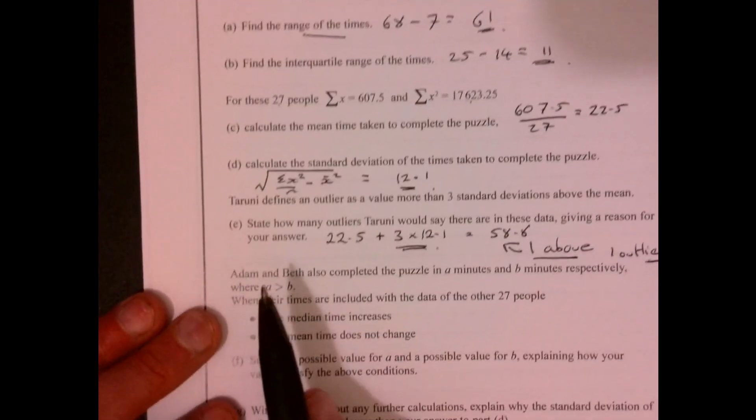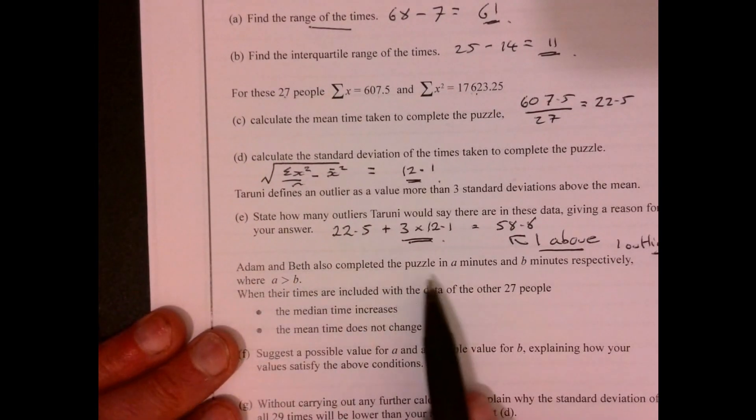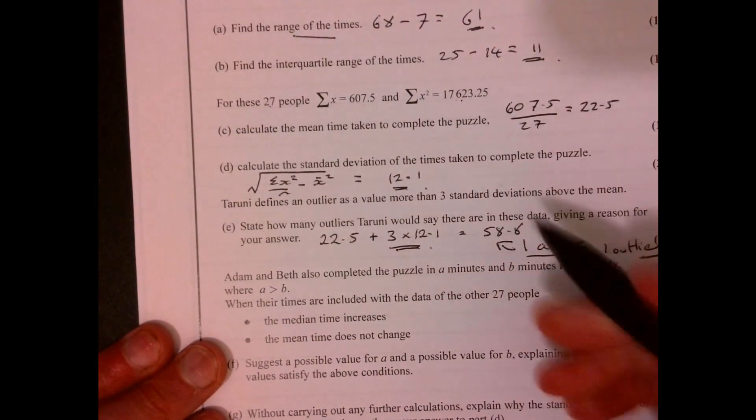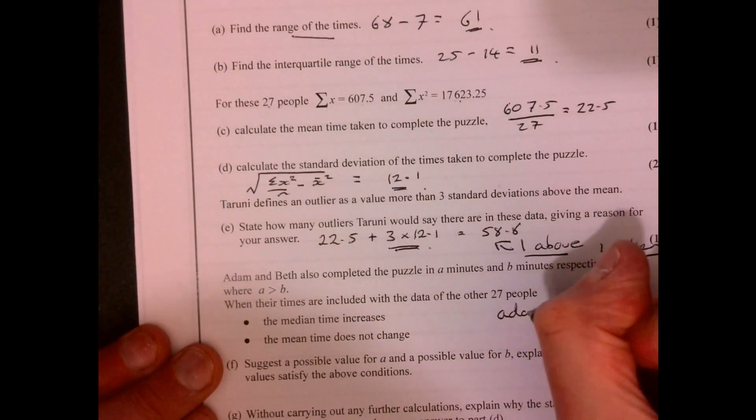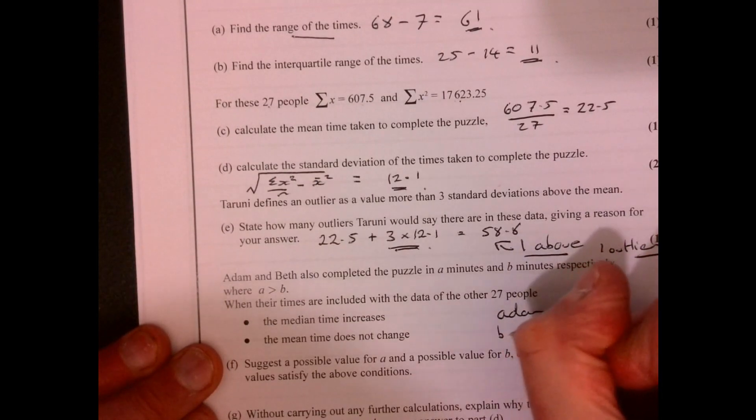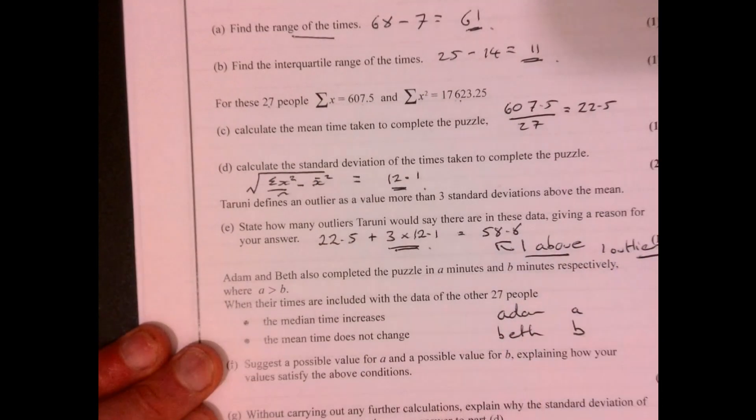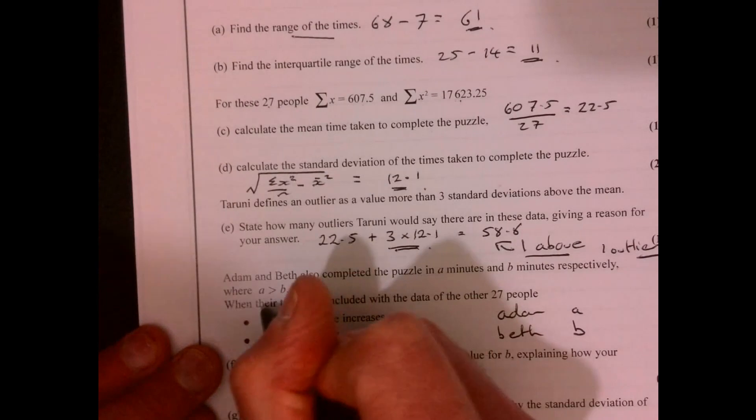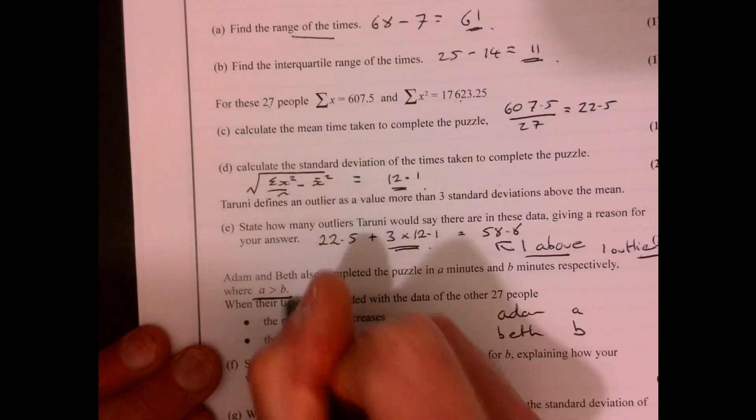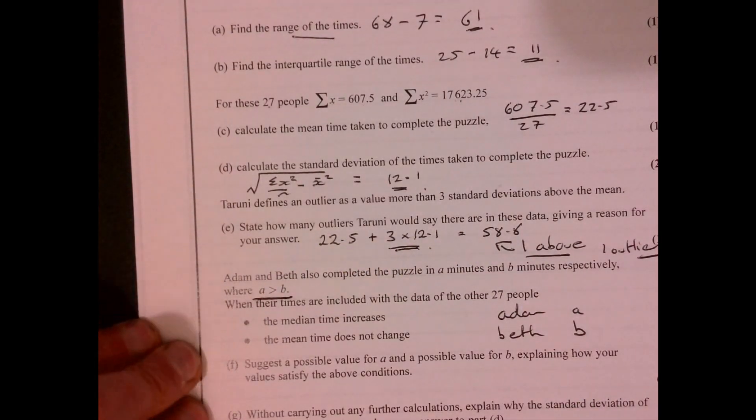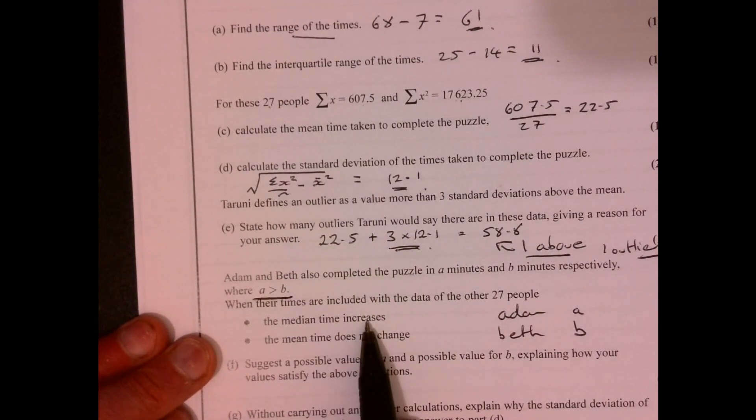Now we've got Adam and Beth also completed the puzzle. So we've got Adam, that's A, and we've got Beth, B. And we also know that Adam took longer than Beth. We're told that the median time increases.